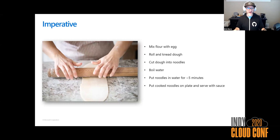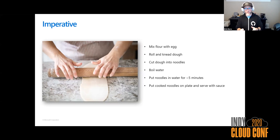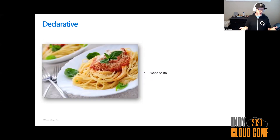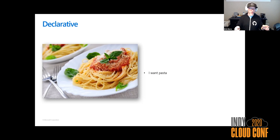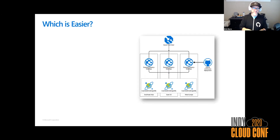I love to think of this as pasta. If I said I want some pasta, the imperative approach would be: mix some flour, roll the dough, cut into noodles, boil water — all of those steps have to happen in that specific order. If I need to add something in, it becomes much harder to change. As opposed to the declarative approach where I say: I want pasta. I don't really care what you do to get that onto my plate, just do it. The declarative approach is really what people think of when they think about infrastructure as code.